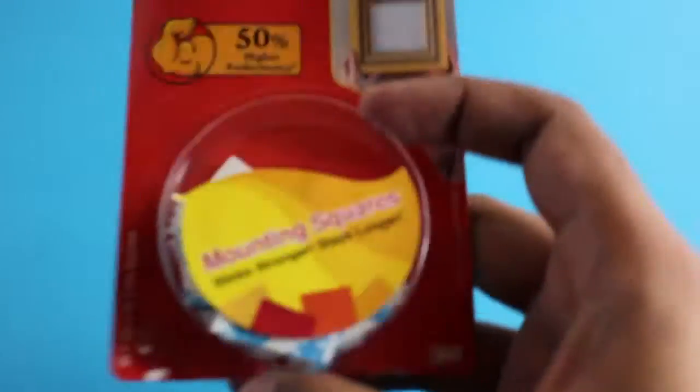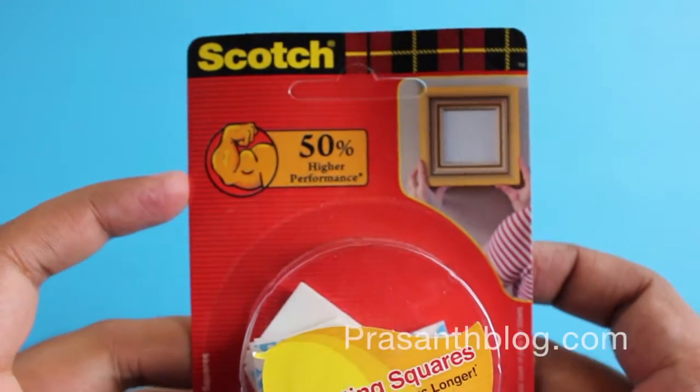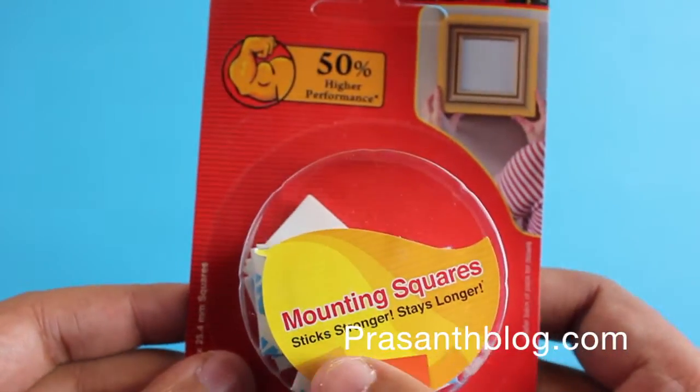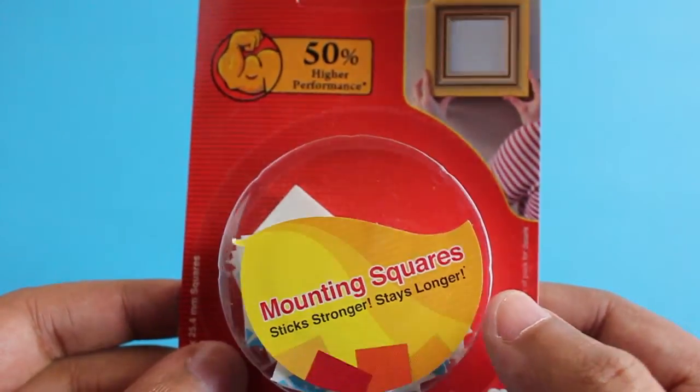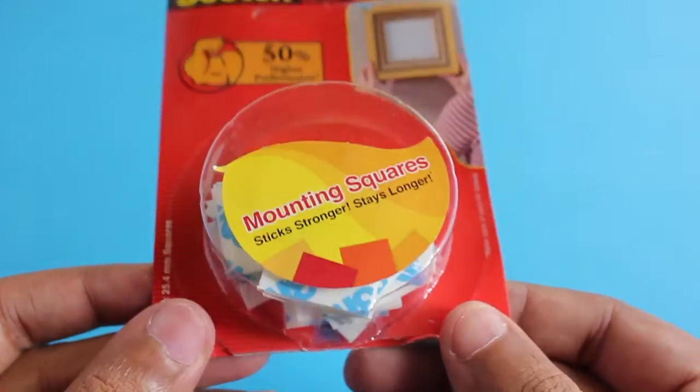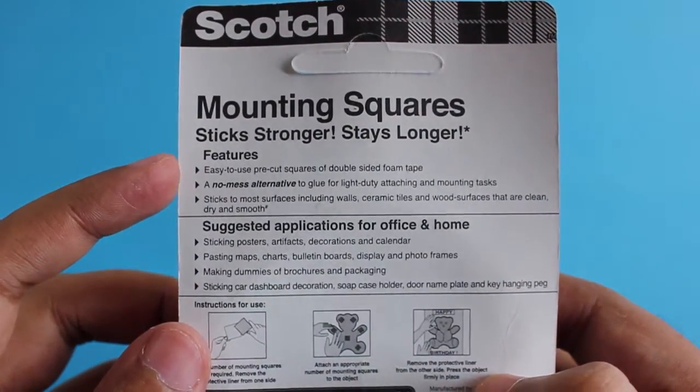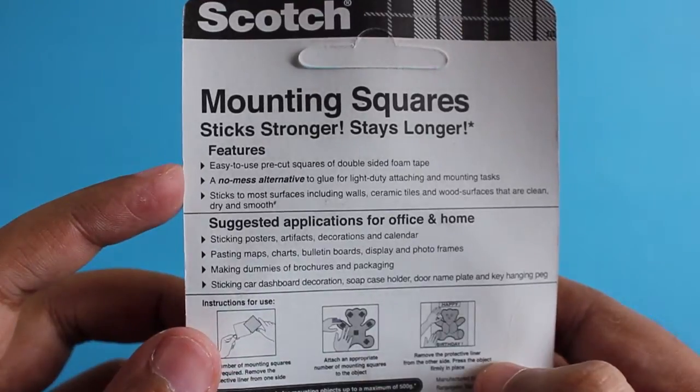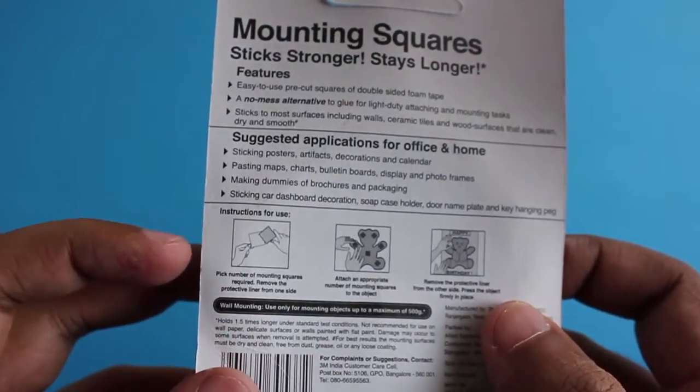Hello guys, let's take a look at these Scotch mounting squares. This size is 50% stronger than regular ones. It's a double-sided tape but they've already been cut into pieces, so you don't have to worry about cutting.